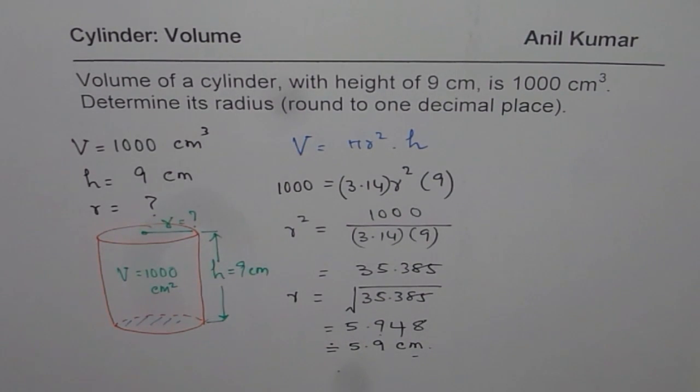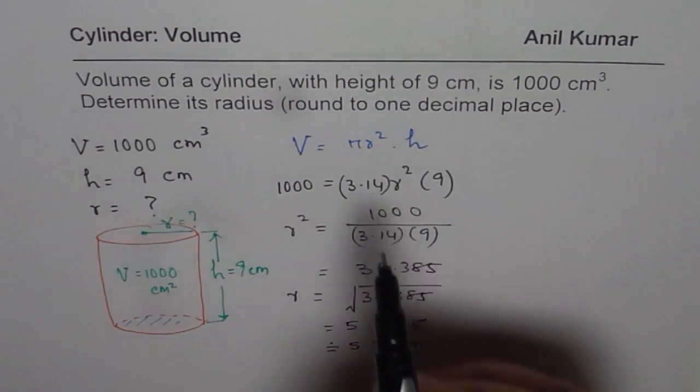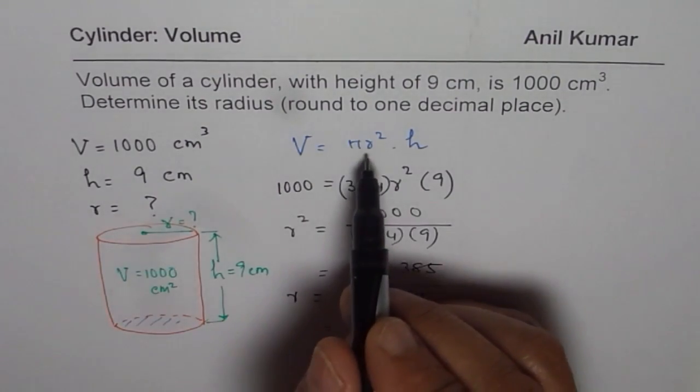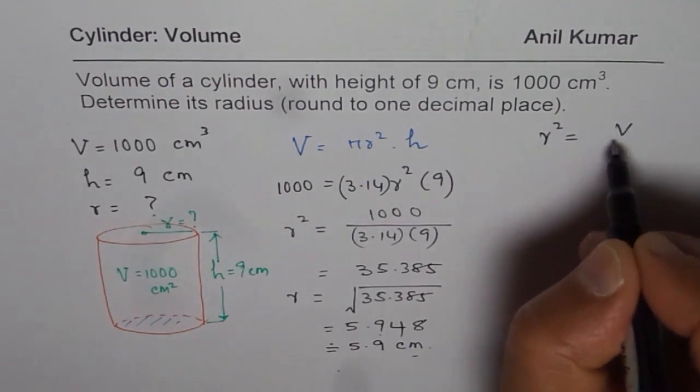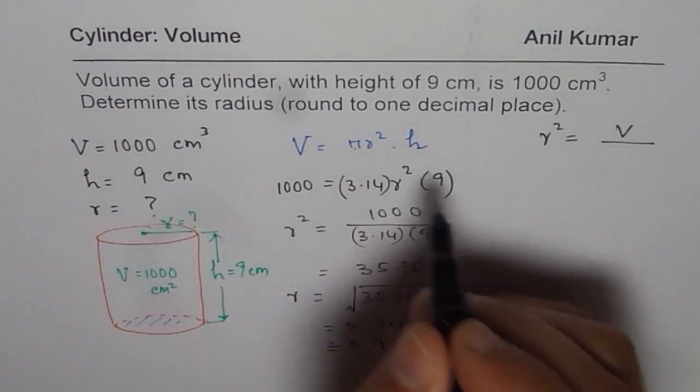So the idea here is use the formula volume is pi r square h to find the unknown. Unknown was radius. You can actually rearrange the formula also. You can write this as radius square equals to volume divided by pi and h.